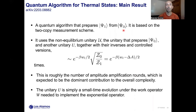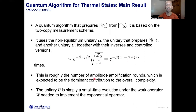We are now ready to state the main result of our paper. We provide a quantum algorithm that prepares psi1 from psi0, based on the two-copy measurement scheme. Our algorithm uses the non-equilibrium unitary U, the unitary that prepares psi0, and some other unitaries together with their inverses and controlled versions, a number of times that scales as exponential of minus beta times WL over 2, multiplied by the square root of the ratio of the partition functions — which can be expressed simply in terms of the free energy difference.